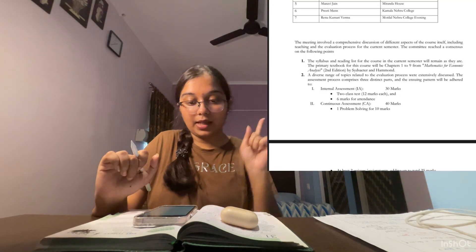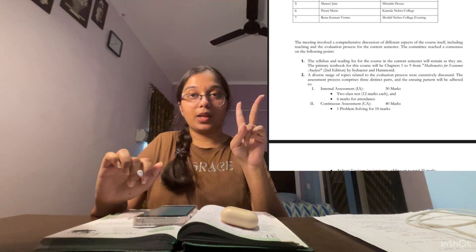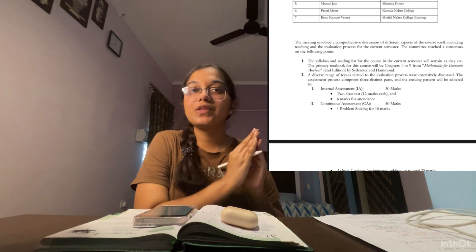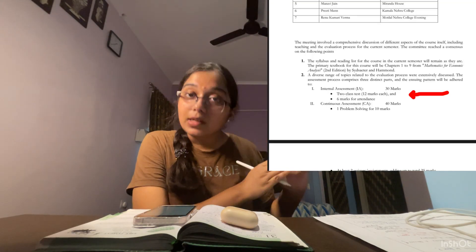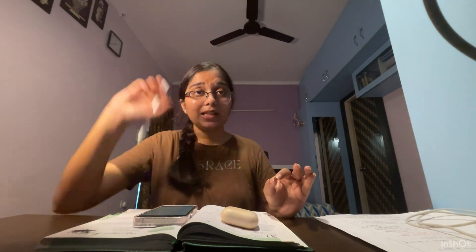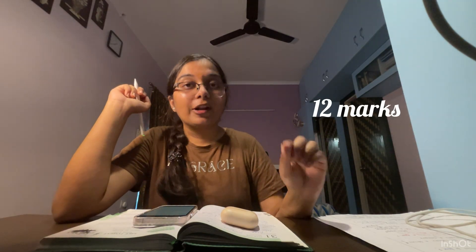Now for the internal examination — which is 70 marks total — there are two parts: internal assessment carrying 30 marks, and continuous assessment carrying 40 marks. At Miranda House, and I believe most colleges follow a similar pattern, the internal assessment consists of two class tests. For Economics, one test is of 12 marks and the other is also 12 marks, totaling 24 marks.